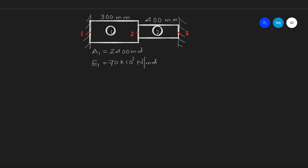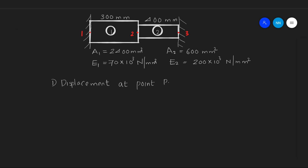We have converted the Young's modulus into N/m² as other dimensions of elements were given in N/m². Let's start with the first question: displacement at point P. We have the finite element equation for any element in terms of force and displacement, that means F = Ku. So let's write down the finite element equation for element number 1.